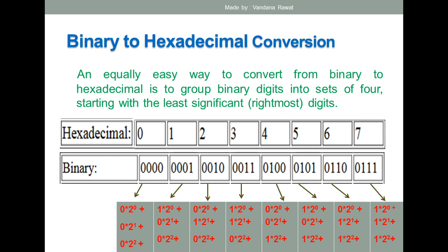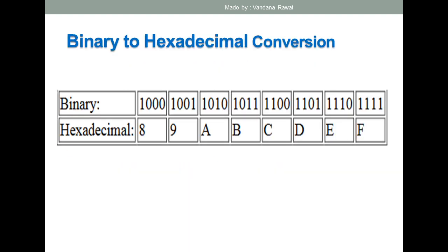You can apply a shortcut: if a hexadecimal number like 45 is given and you need to convert it to binary, you can directly write the answer. For 4 it is 0100, and for 5 it is 0101, so the binary representation of 45 hexadecimal is 0100 0101, with base 2.